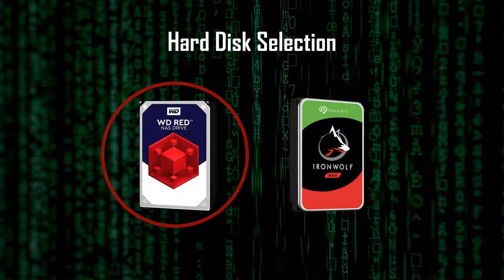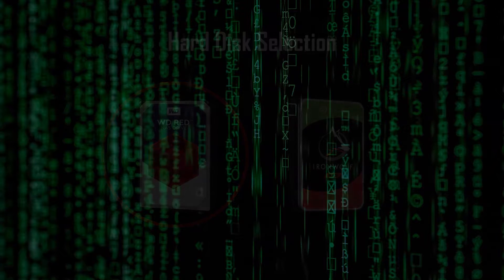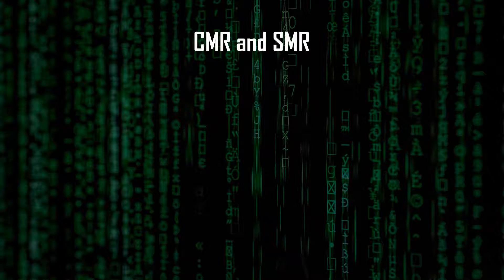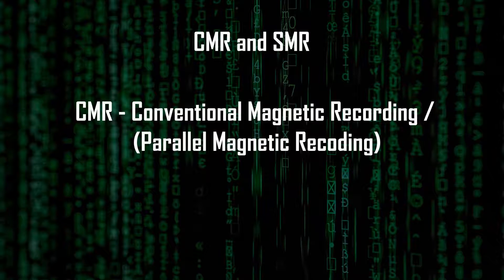While I was waiting for the other parts to arrive, I came across an alarming article — alarming for me, because I had already purchased my hard disk drives without knowing about this issue. It has something to do with the recording technology used in some of today's hard disks. There are two recording methods used in hard disks: CMR or conventional magnetic recording, also known as parallel magnetic recording, and SMR or shingled magnetic recording.